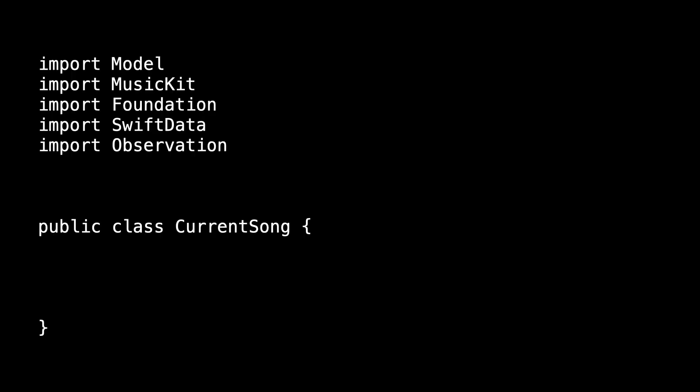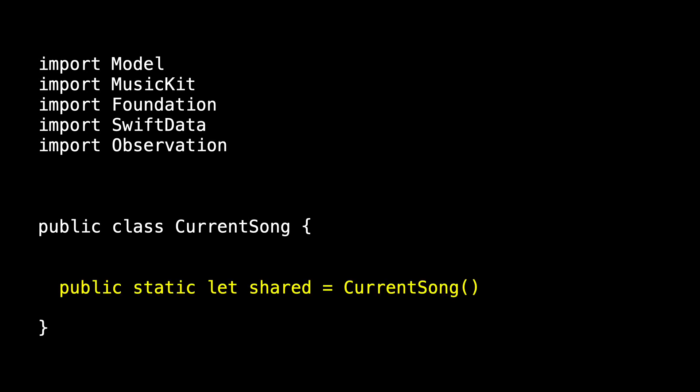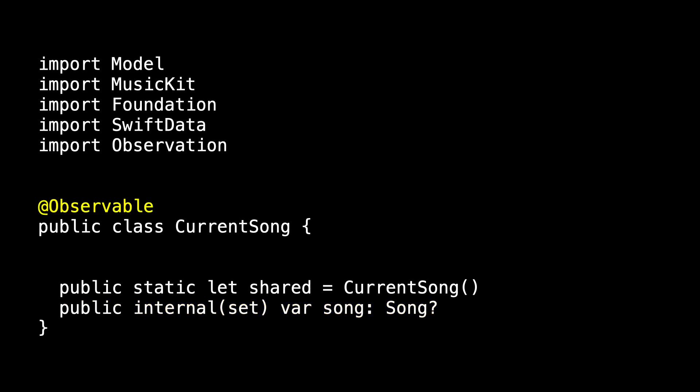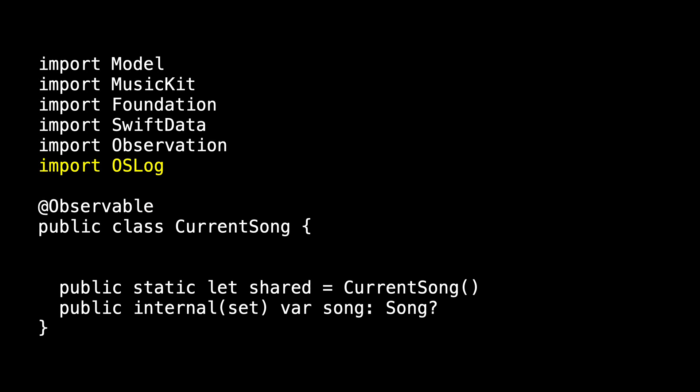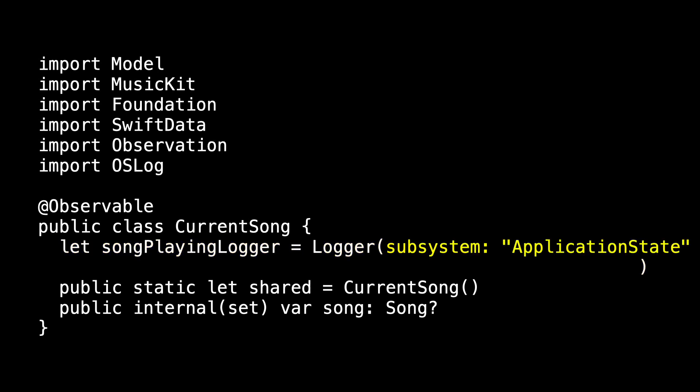OS Log is not new — you can go back a couple of years and find a nice WWDC presentation on it. Looking at my current song class, I already have a public static shared instance and a member property that tracks the currently playing song. First I'll import OS Log, then I'll create an instance of Logger that I'll call songPlayingLogger. Because we're going to want to filter this output, we can specify the subsystem. Current song is part of the application state module, so application state is my subsystem.